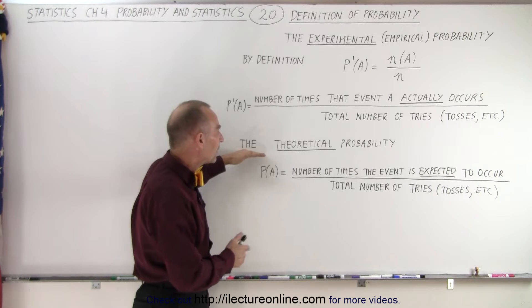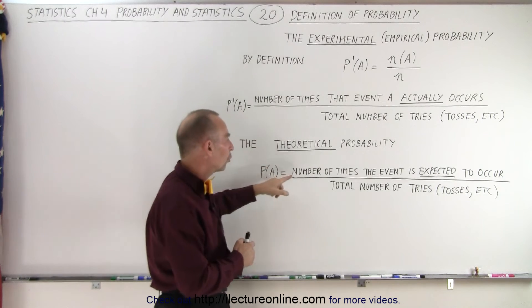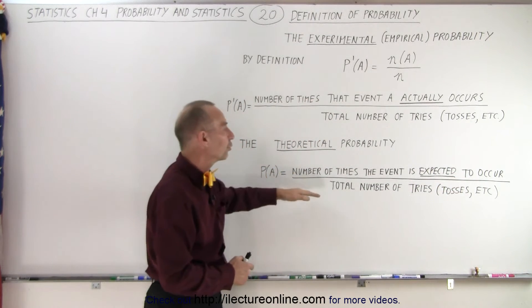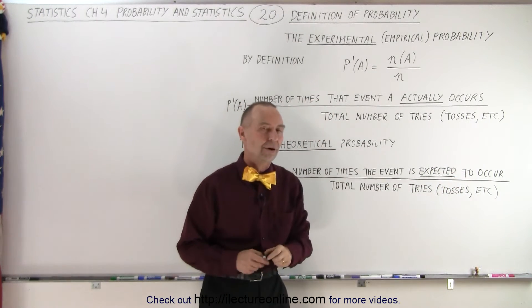But the theoretical probability says that it's the total number of times the event is expected to occur, divided by the total number of tries, tosses, etc. So,